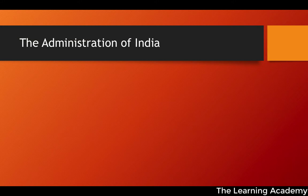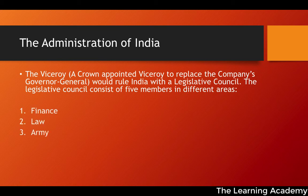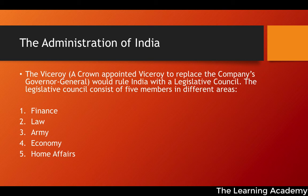Looking at the administration of India following the dissolution of the East India Company: a crown-appointed Viceroy replaced the company's governor-general and would rule India with a legislative council. This legislative council consisted of five members covering different policy areas: finance, law, army and military services, the economy, and home affairs. These five areas of policy directed the rule of India.